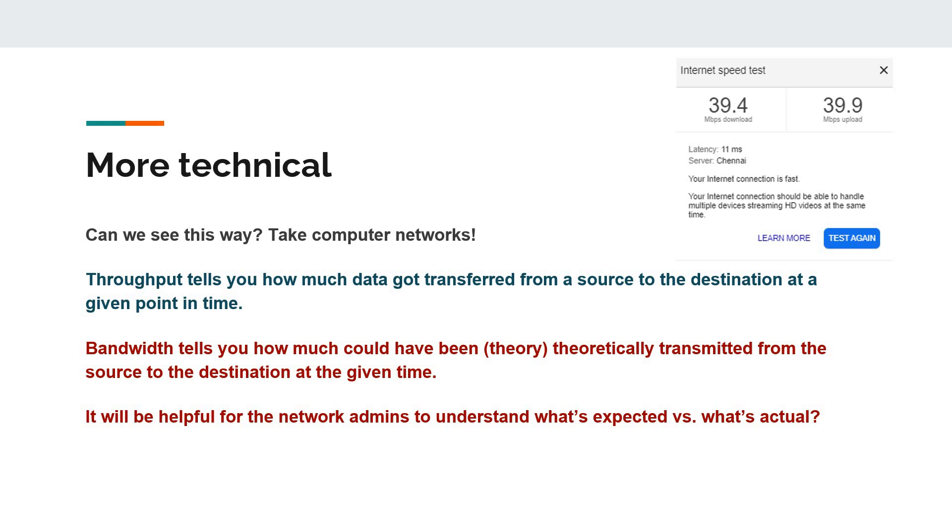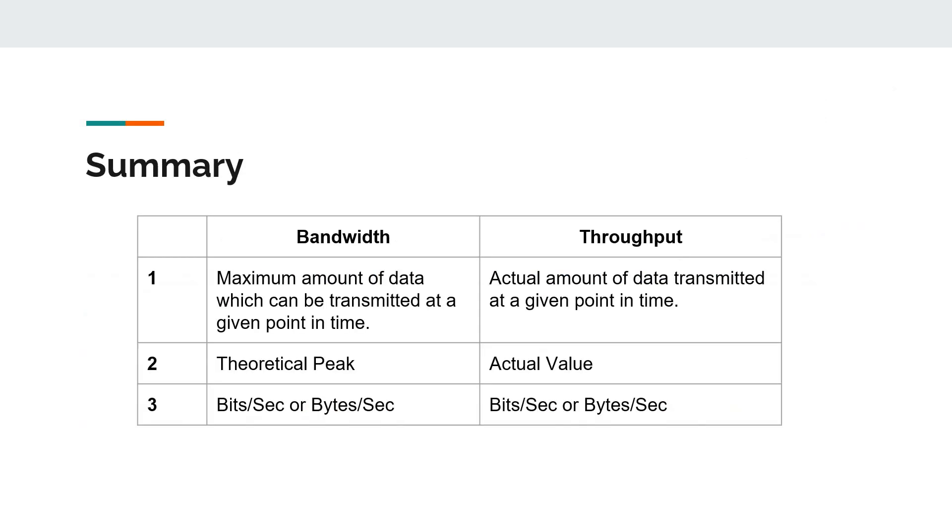Bandwidth is the maximum capacity. Throughput is what you have achieved. It is very useful for network admins to understand the performance through what is expected versus what is actual.